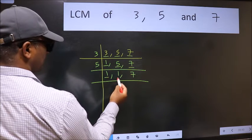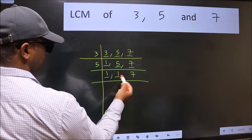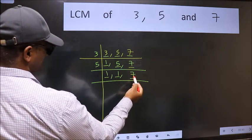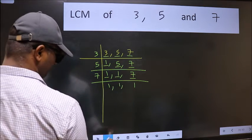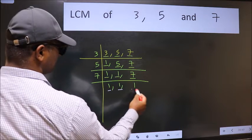Now we got 1 here and here so focus on the next number 7. 7 is a prime number so 7 goes into 7 once. So we got 1 in all the 3 places.